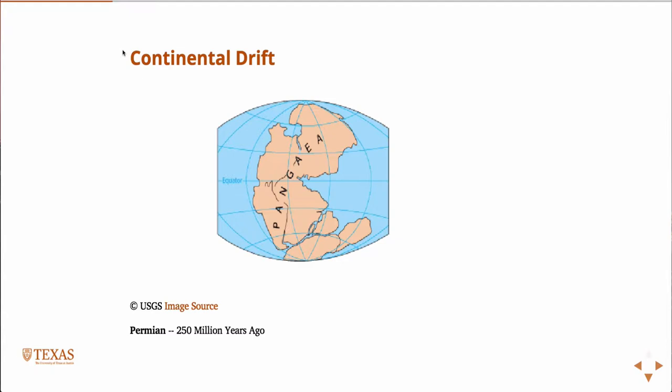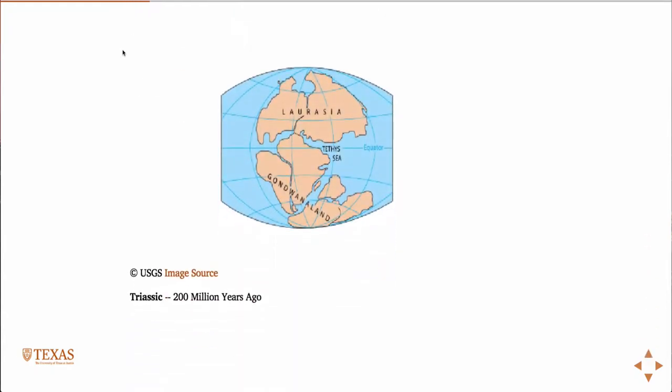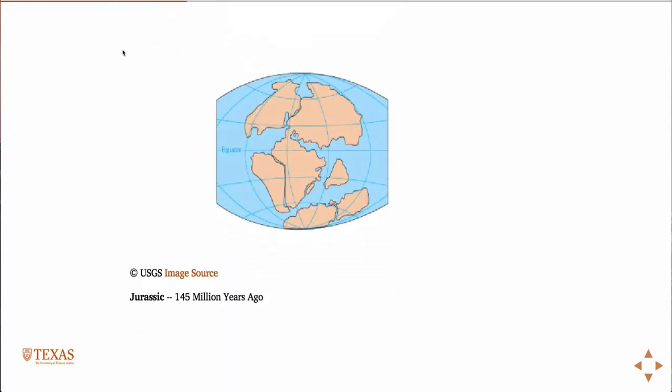This is the idea that at one time, all of the continents were one supercontinent called Pangaea, and then over time, they began to move. They began to separate apart, and this is the time of the Jurassic period, the time of the dinosaurs, and the fossil records even support this theory.